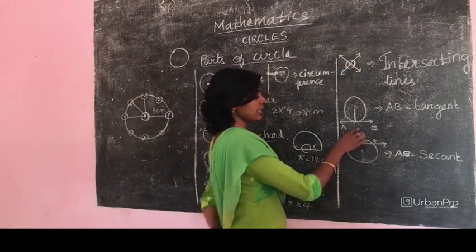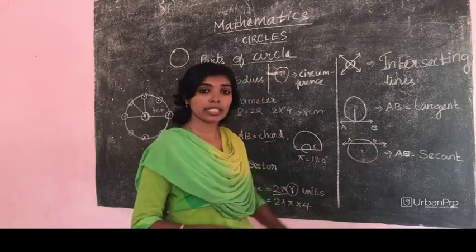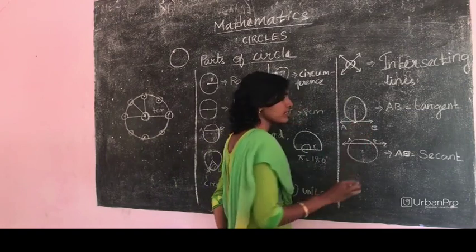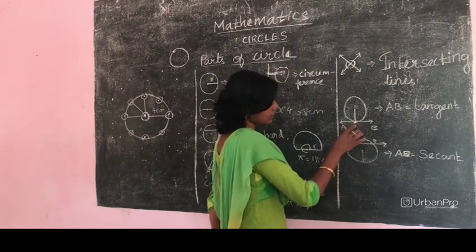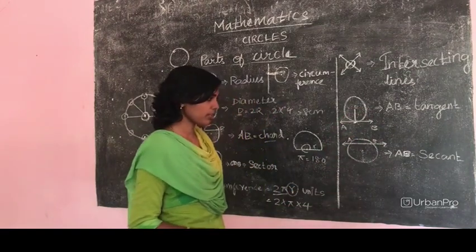Next one is the tangent. Tangent is the intersection between a circle and a line in only one point. It is called a tangent. The tangent and the radius of a circle are always perpendicular to each other.